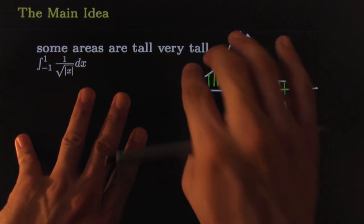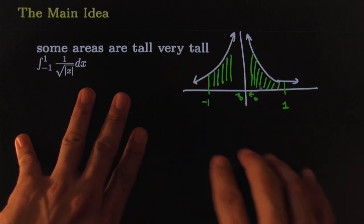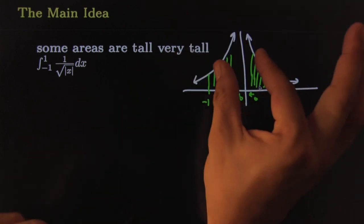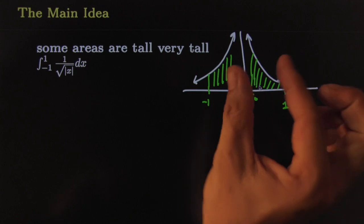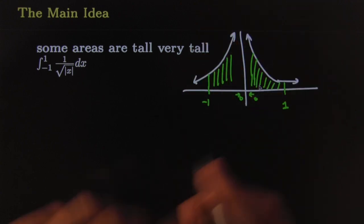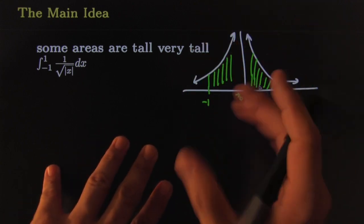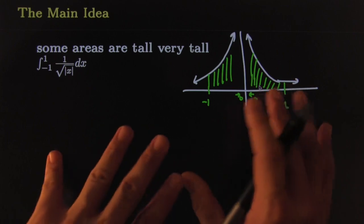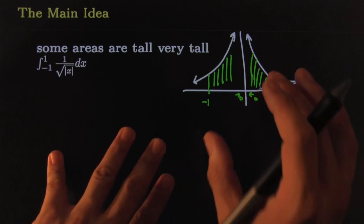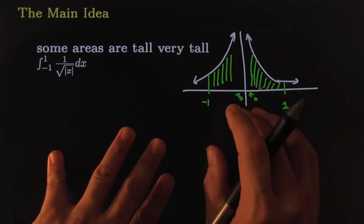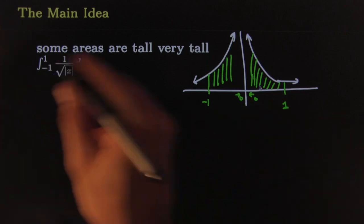The thing that makes this interesting is that sometimes tall areas are finite even if they're infinitely tall because they get thin so much. They get so thin as they grow up, as they grow taller, that the area becomes negligible at some point. And so sometimes this turns out to be a finite area.